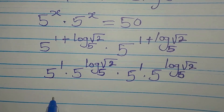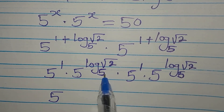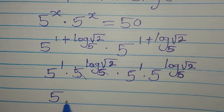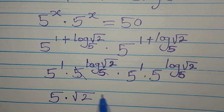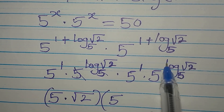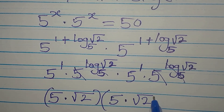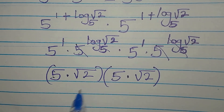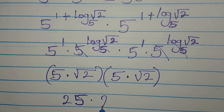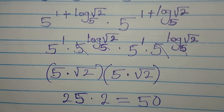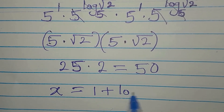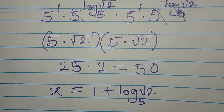Now, 5 to the power of 1 is 5. And since 5 to the power of log square root of 2 to base 5 — the base and the log base are the same — they cancel, leaving just root 2. So we have 5 times root 2 multiplied by 5 times root 2, which is 25 times root 2 times root 2, and that equals 25 times 2, which is 50. This confirms that x equals 1 plus log of square root of 2 to base 5. Thank you for watching.